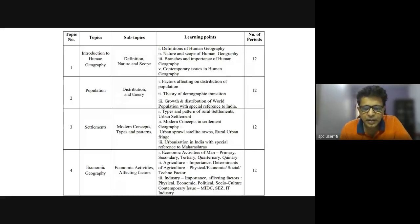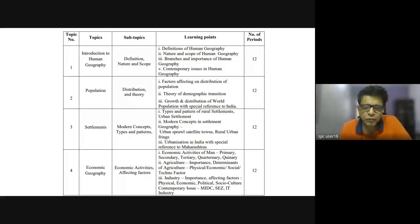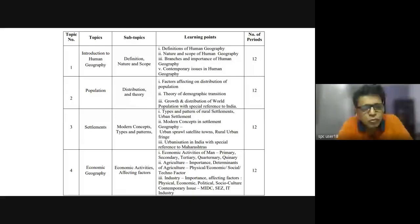However, when we compare physical geography and human geography, there is a significant difference in approaches. The study of human geography is comparatively much more recent than that of physical geography. When did man start thinking about studying himself, his impact, and the impact of nature on him? This is a very recent phenomenon, more or less related to the industrial revolution.